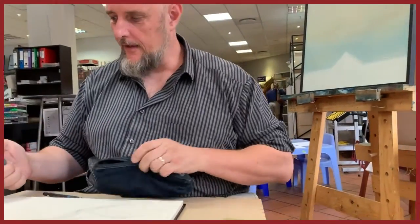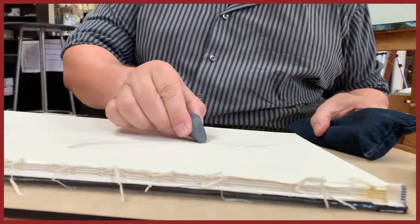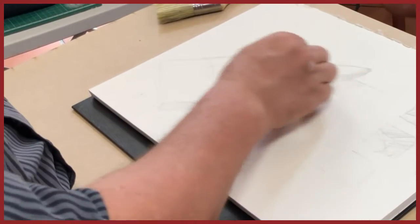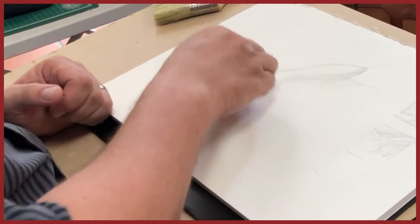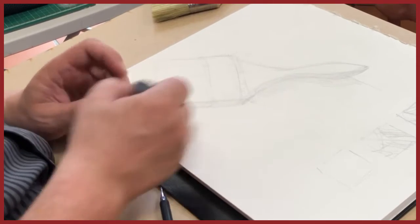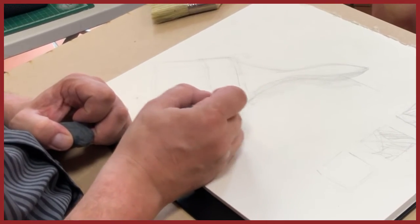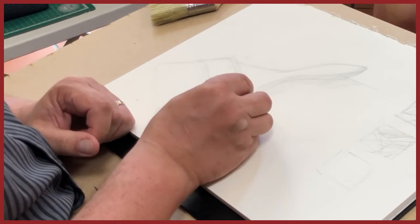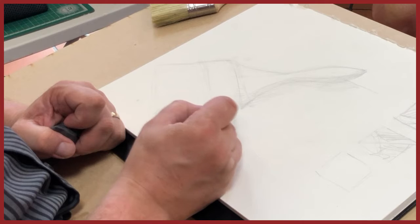Then you can start cleaning up your lines with your kneadable eraser. You can actually shape it quite nicely. You see, for example, little areas of tones here on the edge—it's perfect just for these tiny little elements.